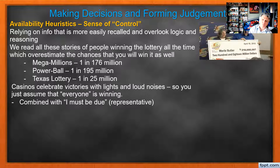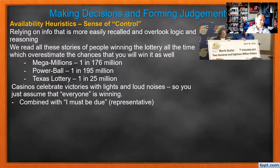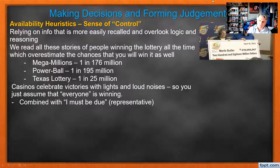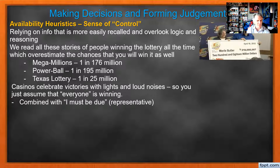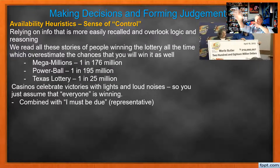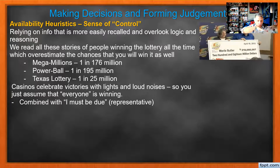It's why people play the lottery — because they remember all the stories of the winner. 'They pick seven numbers, I can pick seven numbers.' So we overestimate the chances that we'll win. Mega Millions: one in 176 million. Powerball: one in 195 million. Texas Lottery: one in 25 million. They're all terrible odds. But we think of the person with the big check; we don't think of the person at Circle K buying scratch-offs, turning wins right back into more tickets and walking out a loser. Casinos celebrate victories with lights and loud noises so you assume everyone's winning — but it's the noise of that one winner over there, not the 20 losers between you and him.